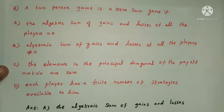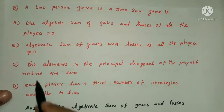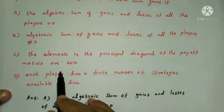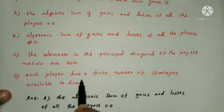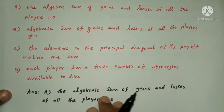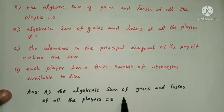Next question: a two-person game is a zero-sum game if? Option A: the algebraic sum of gains and losses of all the players is equal to zero. Option B: the sum is not equal to zero. Option C: elements in the principal diagonal are zero. Option D: each player has a finite number of strategies. The answer is Option A: the algebraic sum of gains and losses of all players equals zero.